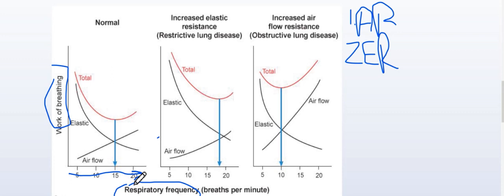When the respiratory rate increases, the breaths are getting shallower. When the breaths are getting shallower, that means the tidal volume is decreasing. So the respiratory rate is increasing and the tidal volume is decreasing — keep these two points in mind as we move on to this graph.